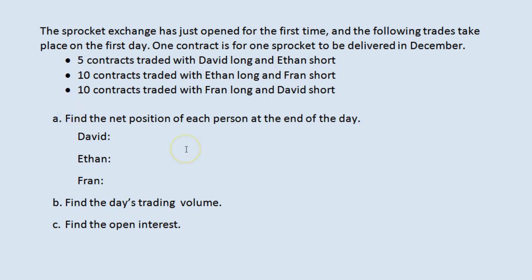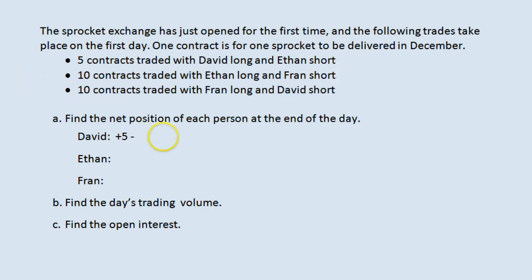The first question: find the net position of each person at the end of the day. David has first traded five contracts long, and we usually think of those long positions as positive numbers — long sounds like a positive thing and short sounds like a negative thing. So David is long five contracts, represented as plus five. But then later in the day he also trades ten contracts short, leaving him at minus five.